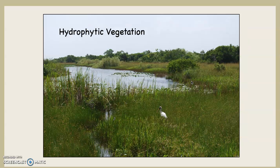And hydrophytic vegetation. Hydrophytic vegetation is vegetation that lives in water. Most vegetation needs water, but hydrophytic vegetation literally lives in water. For example, seaweed or kelp is both hydrophytic and halophytic, but I'm talking about vegetation that's on land.